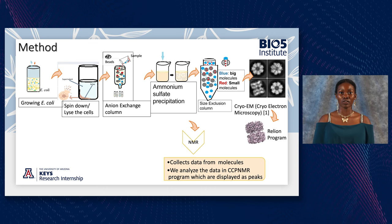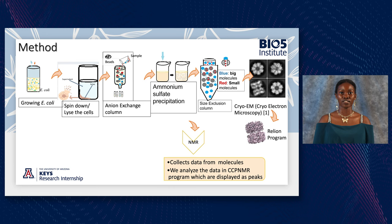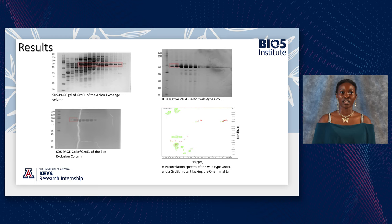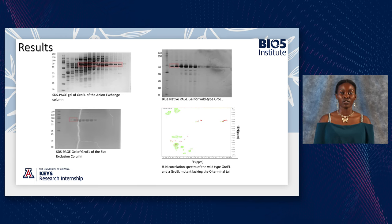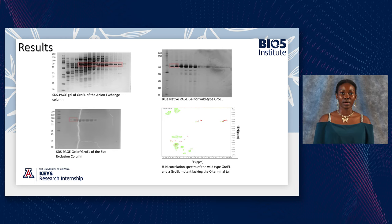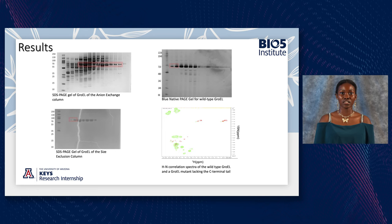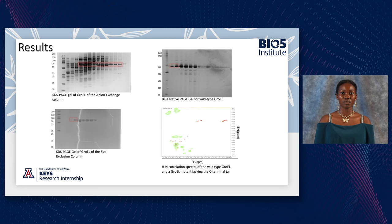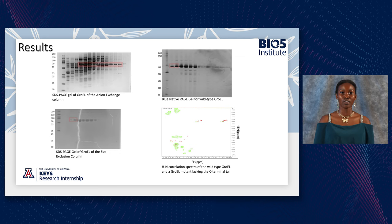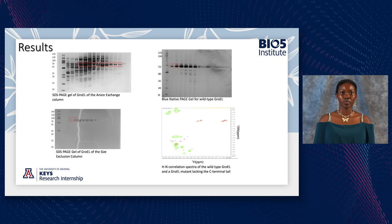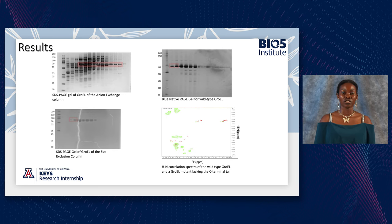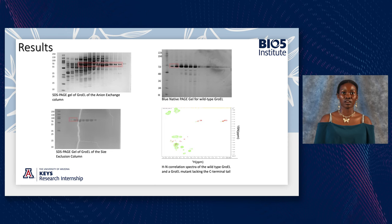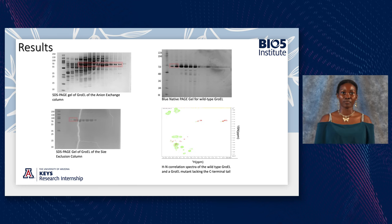Our methods involved growing E. coli to express GroEL, purifying it through various methods on gel, and then using NMR to collect data as peaks. The first gel showed many proteins needing further purification. A native PAGE gel was then used to confirm protein purity, and the purified protein was used in NMR. The NMR spectrum showed green peaks representing wild-type GroEL — GroEL with tails — and mutated GroEL without tails. The additional peaks in wild-type GroEL suggest those green peaks could represent the tails, and we hope in the future to study how those tails fold proteins and conduct more research on that. Thank you.